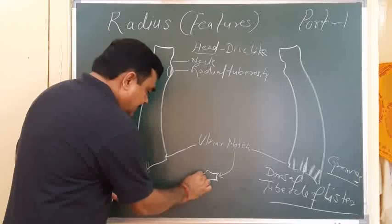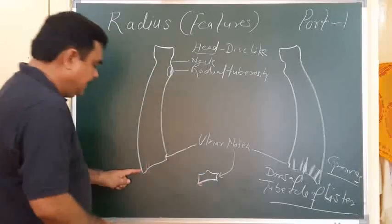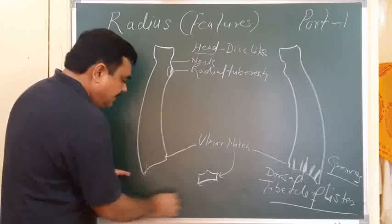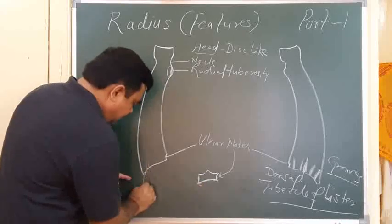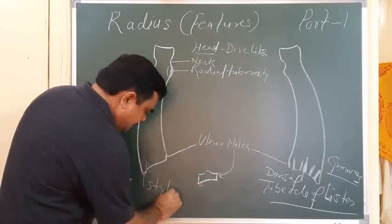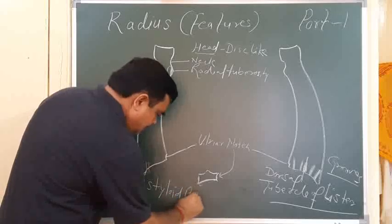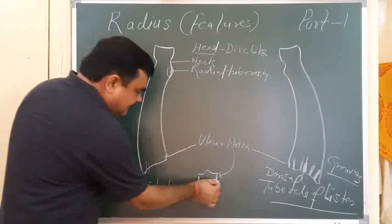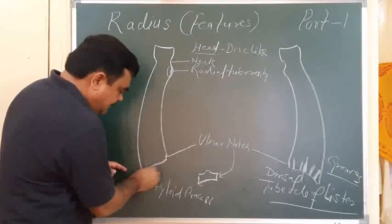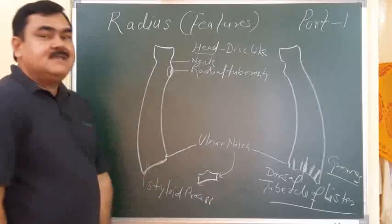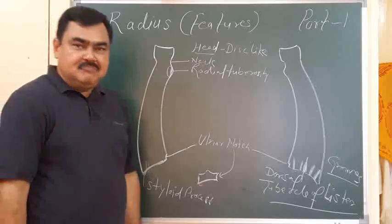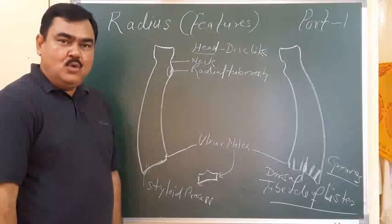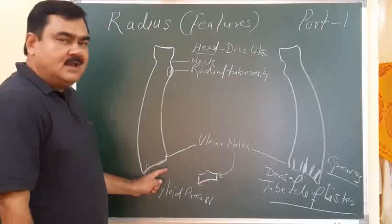The lateral surface projects downward and forms the styloid process. The inferior surface articulates with the scaphoid and lunate bones, forming the wrist joint.